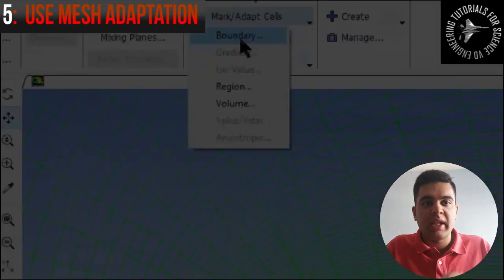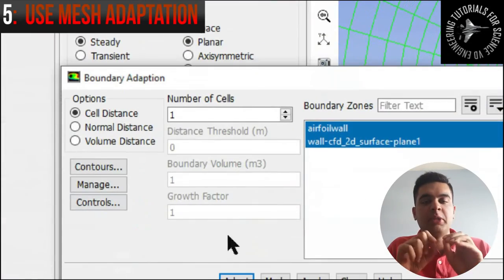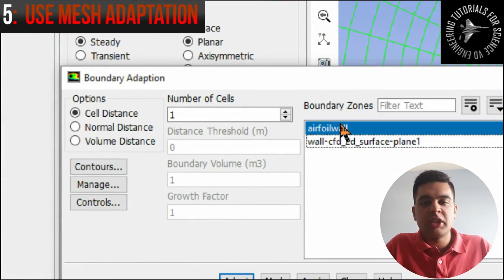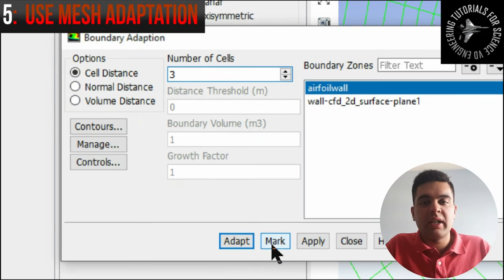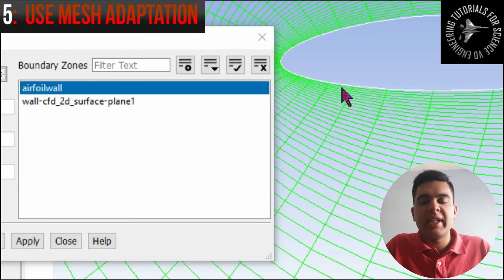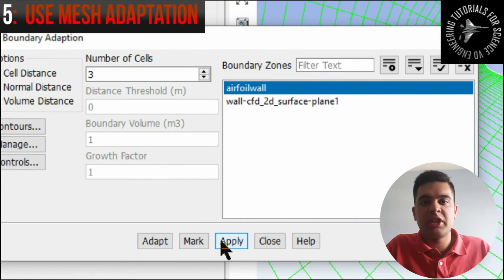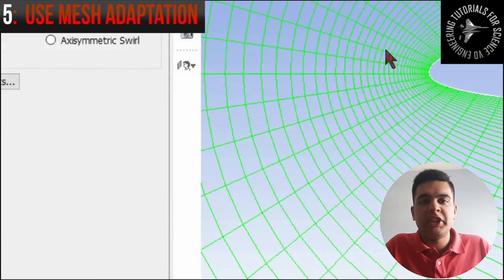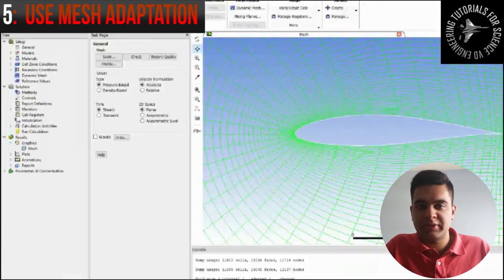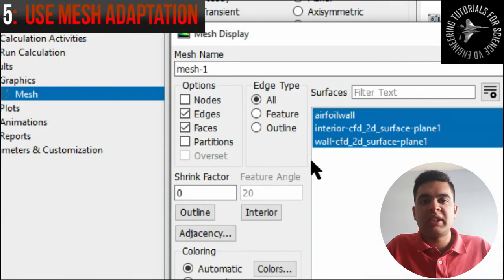So that brings me to tip number five which is adapt the boundary. What this means is in ANSYS there's a feature where you can adapt your mesh so the mesh near the wall, the airfoil wall, you can make it more dense by adding a few more divisions in that mesh. And the way you do that is you simply use the adapt boundary feature in ANSYS. I'm pretty sure other CFD programs will also have this feature as well.